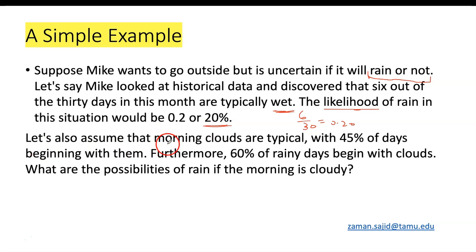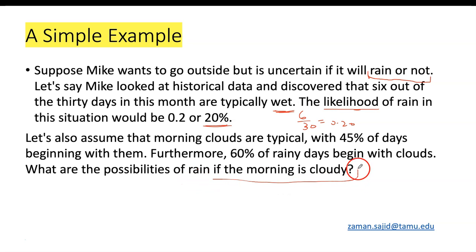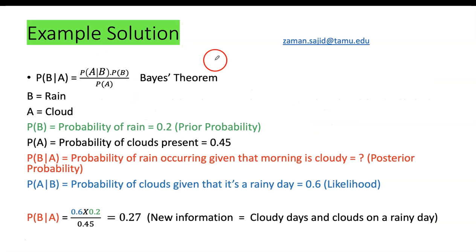Assume that morning clouds are typical with 45 percent of days beginning with them. Furthermore, 60 percent of rain days begin with clouds. What is the probability of rain if the morning is cloudy? That is our objective — we want to find out the probability of rain given the morning is cloudy.